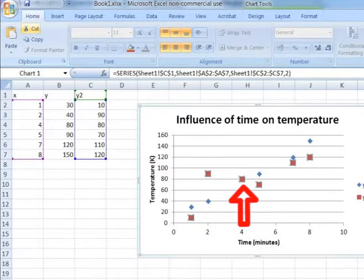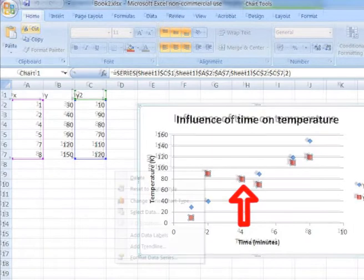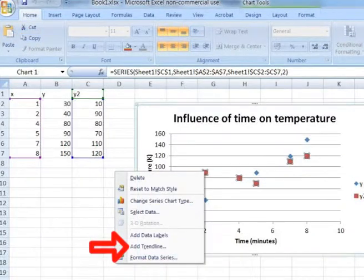So now we have selected the red dots, our red data points, so we will be adding a trendline to those data points. After selecting the data points, right click on your mouse, which then gives you a pop-up, and select Add Trendline.